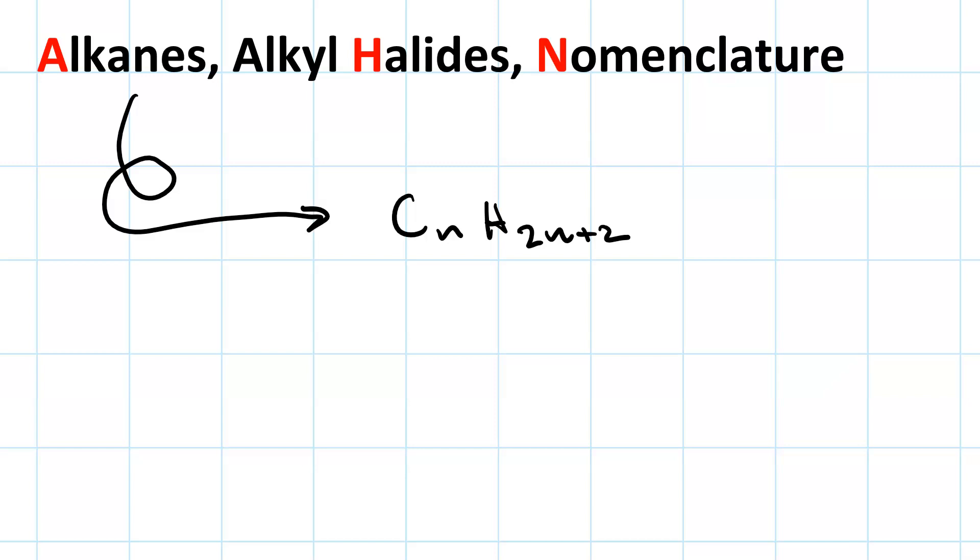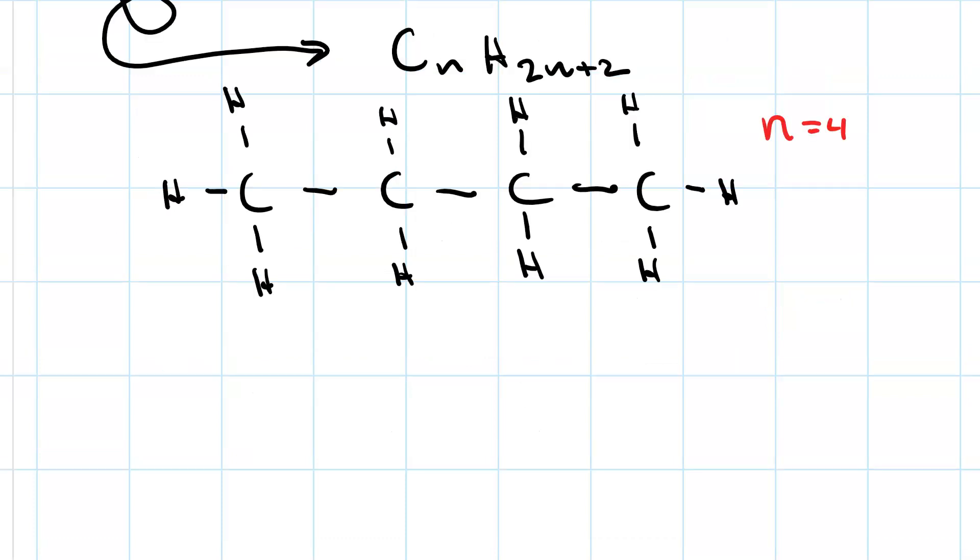And because each carbon wants to make four bonds, there will be twice as many hydrogens plus 2. Say n equals 4. Then we have four carbons. Each carbon is bonded four times.